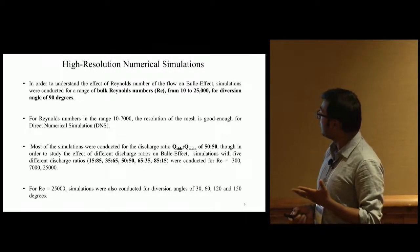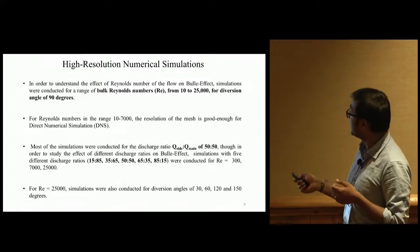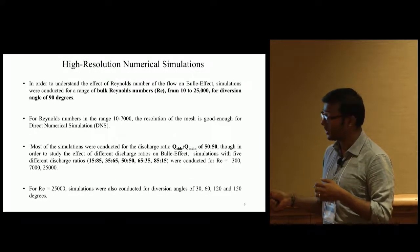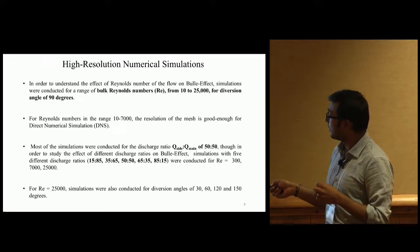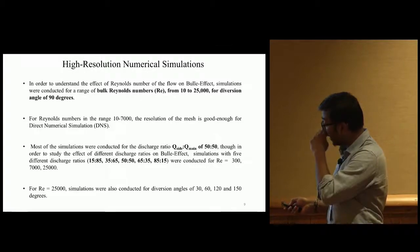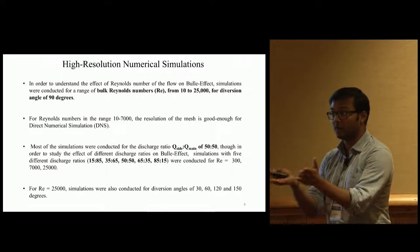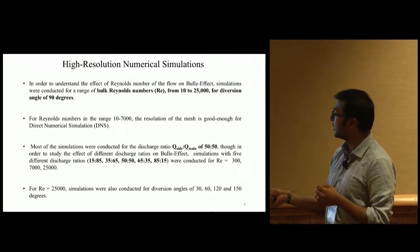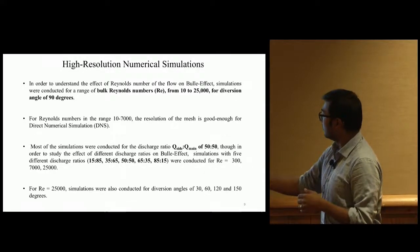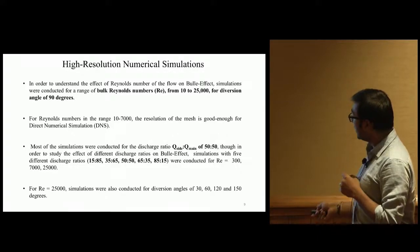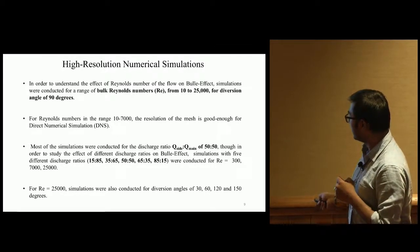For our simulations, we ranged from bulk Reynolds number of 10 to 25,000 for a 90 degree diversion angle. Resolution for Reynolds number 10 to 7,000 was as good as DNS. We did simulations for different flow divisions - not just 50-50, but 15-85, 35-65, and others. We also simulated higher Reynolds numbers and different angles.